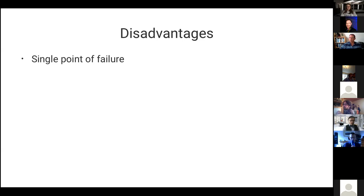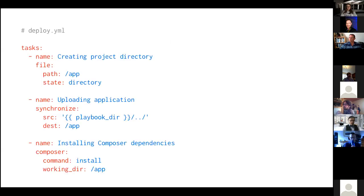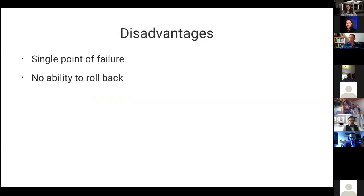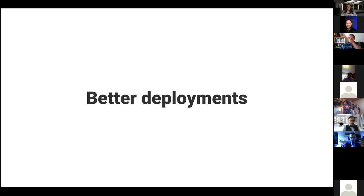There are disadvantages to this basic deployment: there's a single point of failure since everything goes to one /app directory - if a build fails, the site goes down. There's no option to roll back. Data is stored in plain text, though we've addressed that with Vault. To solve the remaining issues, I like using a tool called Ansistrano.